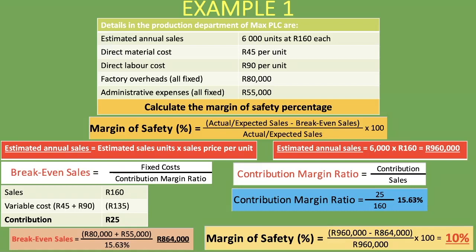So how do we interpret this 10%? For Max plc, its estimated sales can fall by 10% before it starts making a loss. In other words, sales are higher than the break-even point by 10%. This tells us the wiggle room the company has before losses begin. It also indicates risk: the smaller this percentage, the more risky it is for the company; the greater the margin of safety percentage, the better the company can deal with fluctuations in sales.